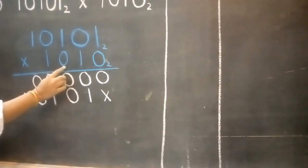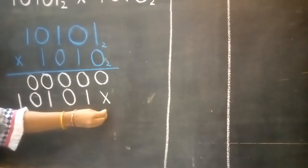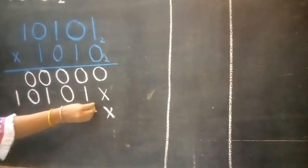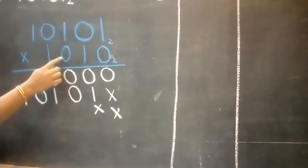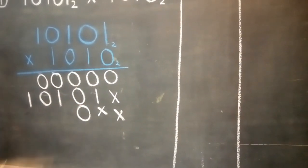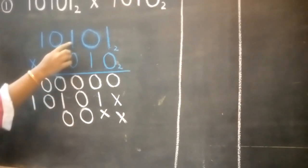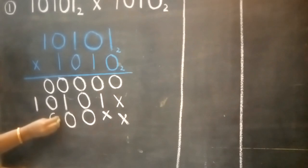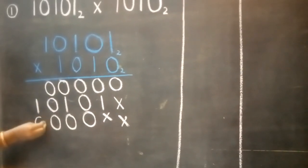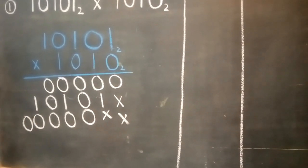Now we will multiply our third digit. So we will put two crosses over here. 0 ones are 0, 0 zeros are 0, 0 zeros are 0, 0 ones are 0.